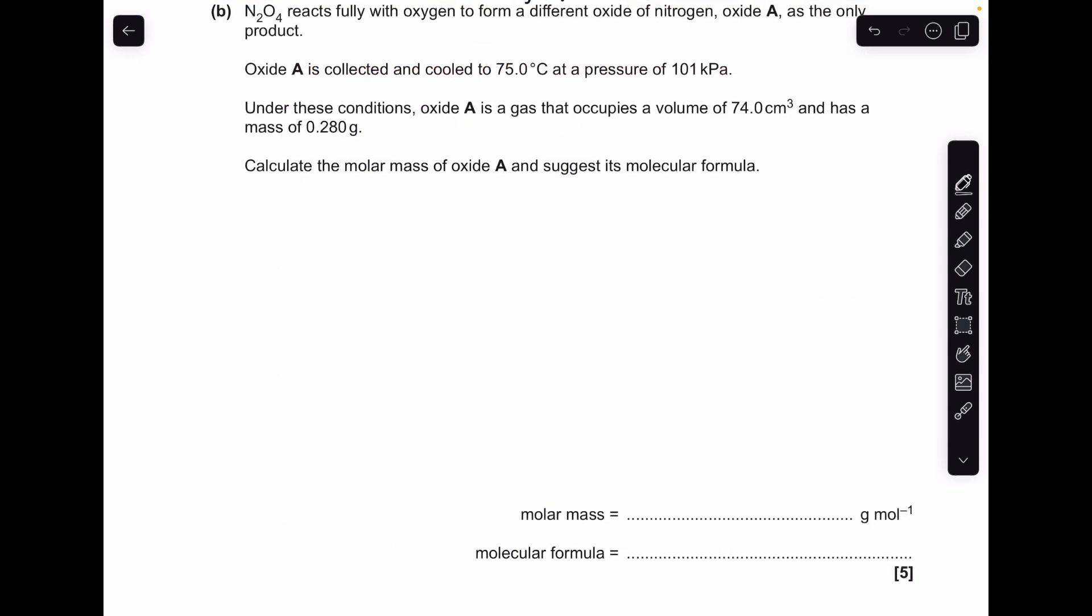Moving on to the final part of the question. Nothing to do with equilibrium this. Just a straightforward ideal gas equation. So we've got the ideal gas equation here. We're rearranging for moles. So it becomes N equals PV over RT.